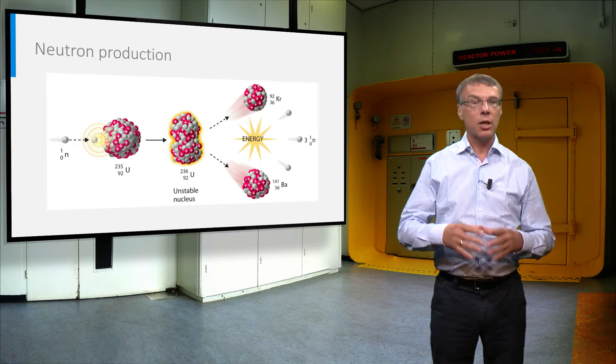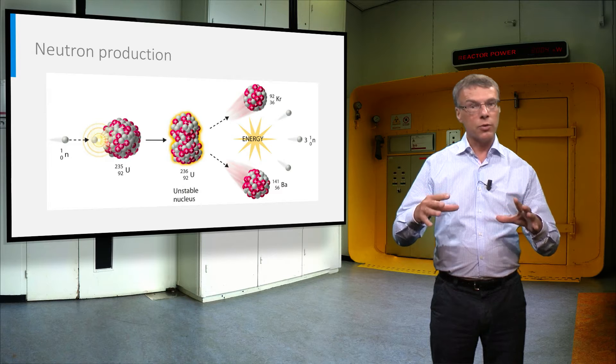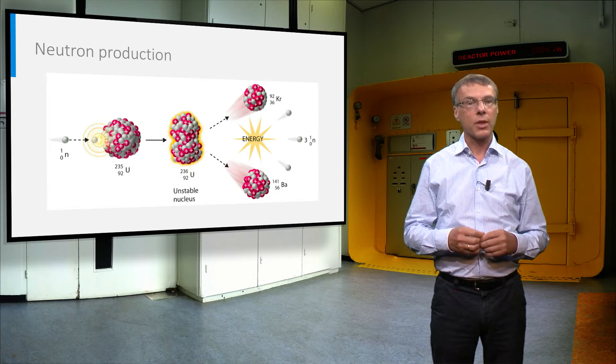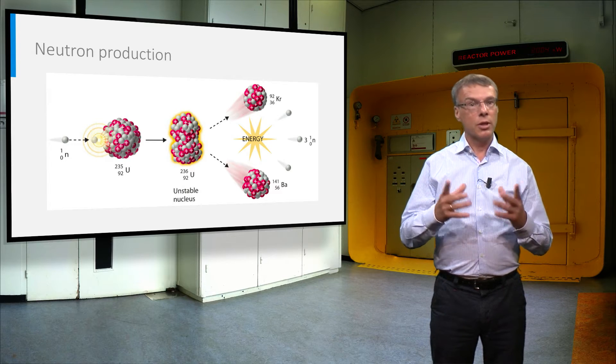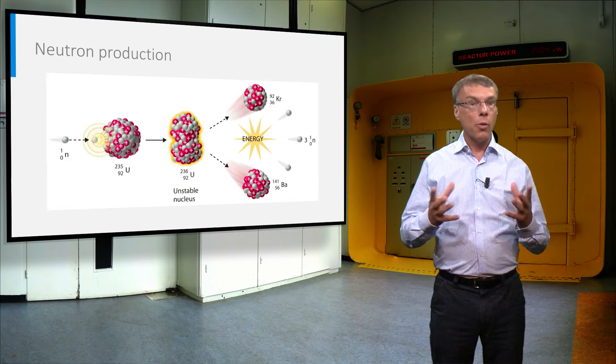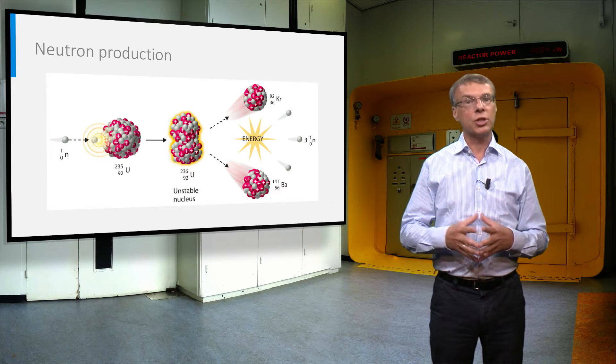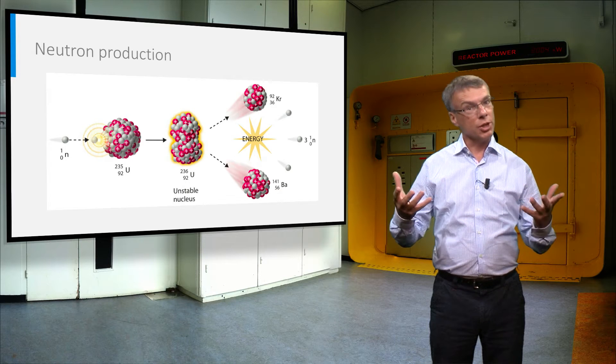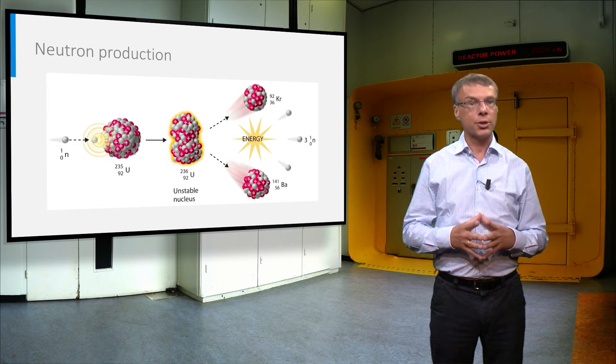In this process, on average, two and a half neutrons are released. In the picture are shown three new neutrons. Obviously we need only one neutron to sustain the fission chain reaction. So what happens to the rest? This I will show you later on.